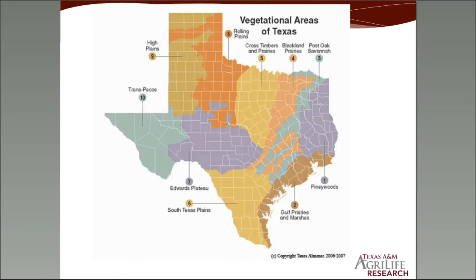Based on our climate, we have the vegetation areas of Texas. You might notice this map looks very similar to the map of our extension regions. There are 10 vegetation areas of Texas, and these factor in with climate and soil to influence what types of vegetation will grow in each region. We might not see the same types of plants growing in the Piney Woods that we would in the Edwards Plateau.